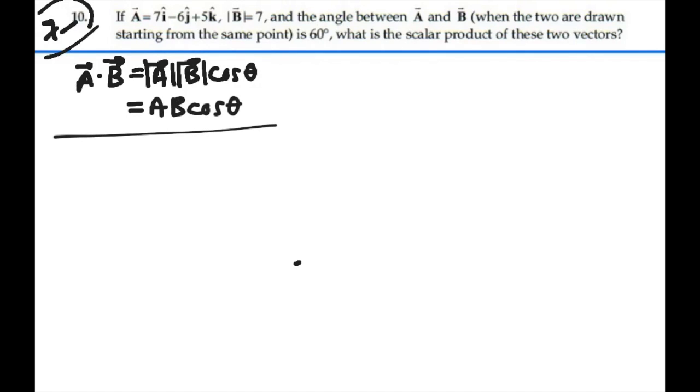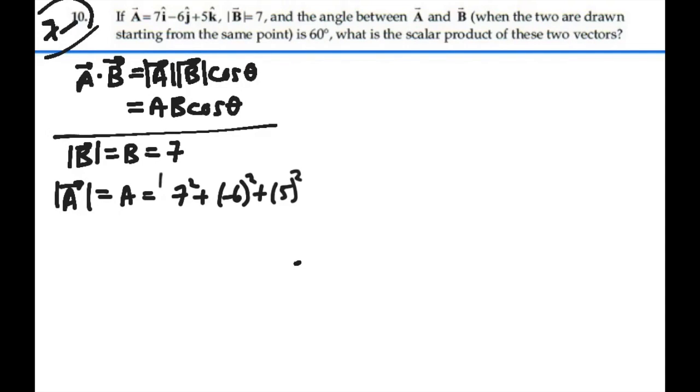In this case, we're told that the magnitude of B is 7. We need to find the magnitude of A. The magnitude of A is going to be the square of all our components added together and then square rooted. So 7 squared plus negative 6 squared plus 5 squared square root is equal to 10.5. Note that when we square the negative 6, it's still going to be a positive quantity.